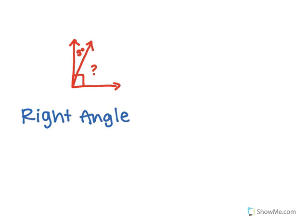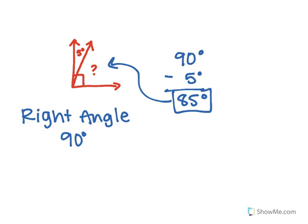What if I gave you a problem like this? I want to know the missing part, but I'm not given the whole. What type of angle is this? This is a right angle. And how many degrees does it have? So can you figure out what it would be? Yeah, we'd take 90 degrees. We'd subtract 5 degrees, and that would give us 85 degrees as the missing angle.